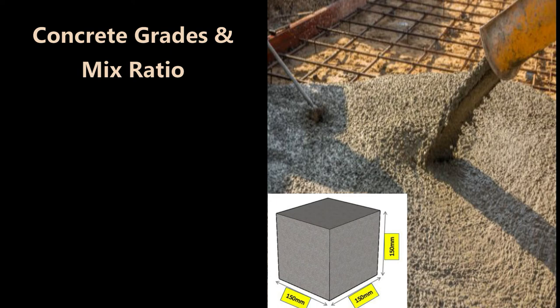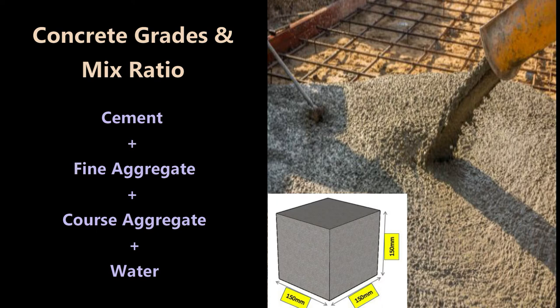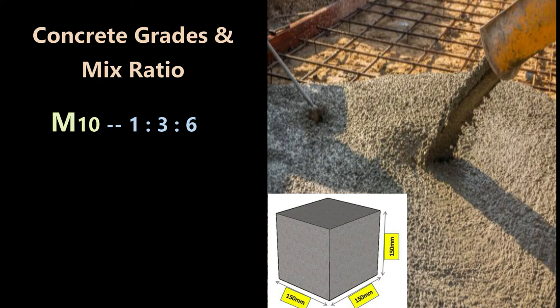The concrete mix ratio is the proportion of its ingredients — cement, sand, coarse aggregate, and water — defined based on the strength required. For M10, the ratio is 1:3:6, meaning one part cement, three parts sand, and six parts coarse aggregate. This achieves a compressive strength of 10 N/mm² at 28 days.